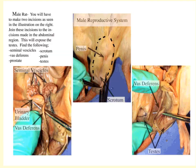Here we have the anatomy of the male rat. We can see the scrotal sac and the penis. If we cut this open we can see the testes, and sitting on top of the testes is the epididymis. Running from the testes is the vas deferens, shown here in relation to the urinary bladder.